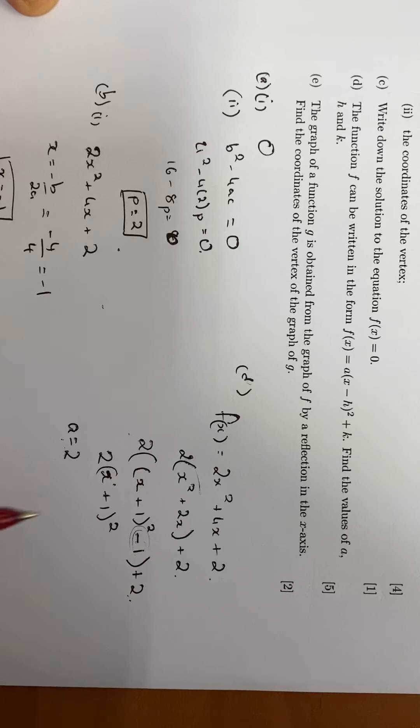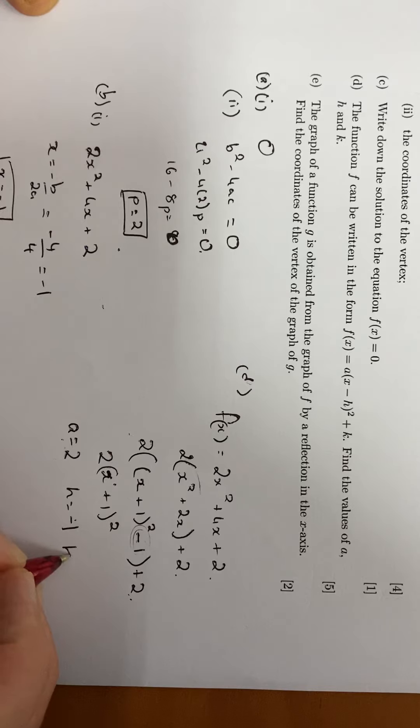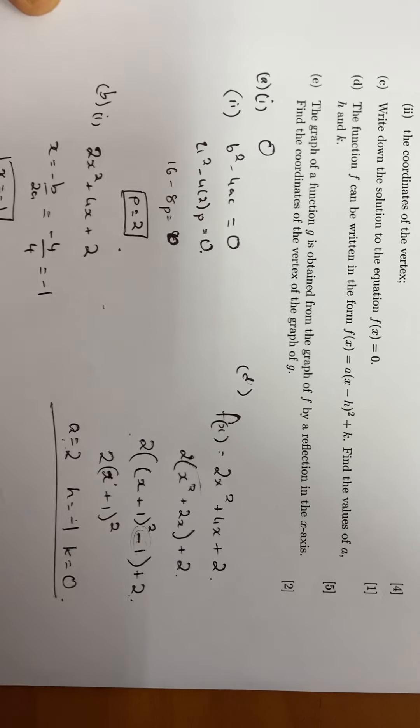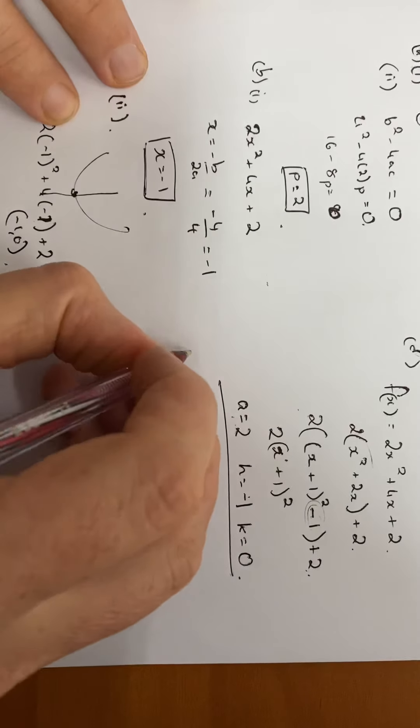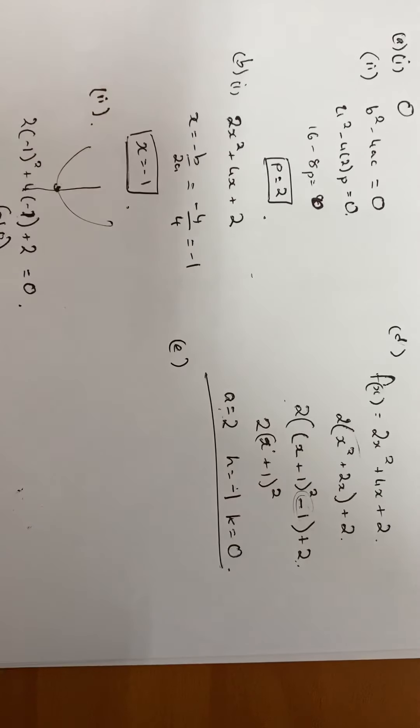a is 2, h is going to be minus 1, and k is 0.